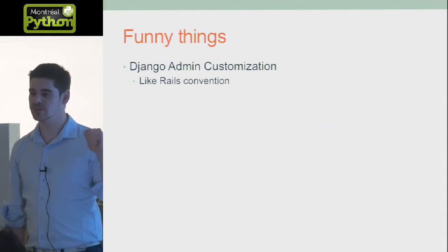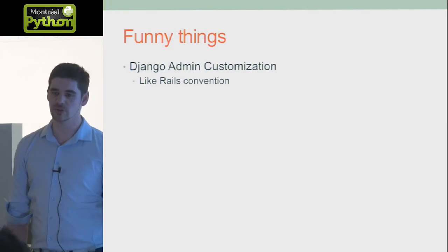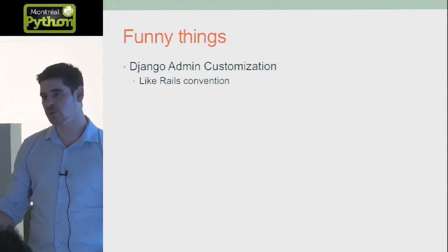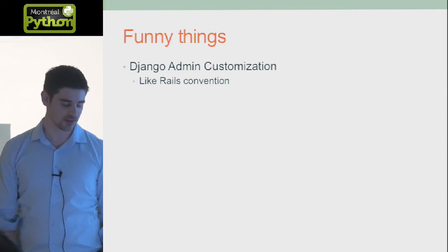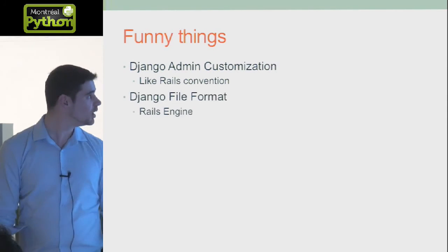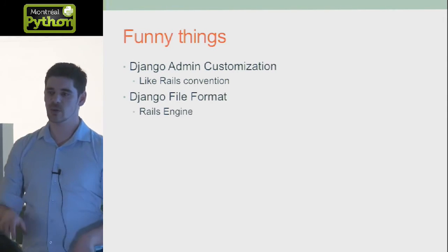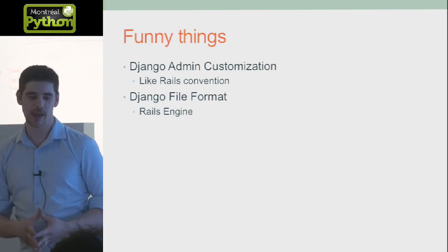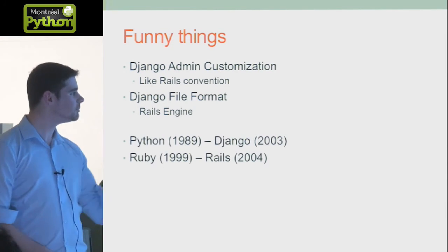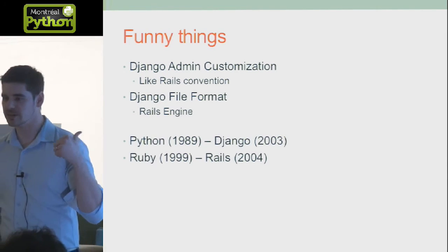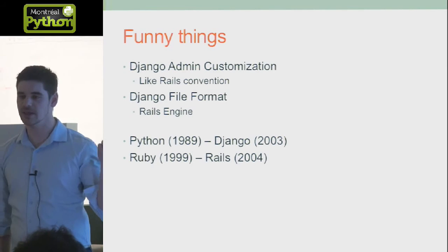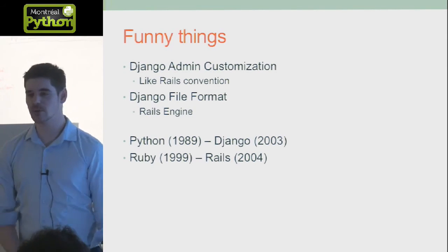Just before I finish, some interesting observations. Django admin customization kind of works like Rails convention — you need to use the right filename in the right place so the framework loads it automatically and you can customize your views. Rails does exactly the same thing, but for everything. Your file structure with different app components is what we also call a Rails engine — a Rails engine is like another Rails app you can inject into your own app. And one last thing: Python and Django are older than Rails and Ruby. Python by 10 years and Django by about six months — according to Wikipedia dates.